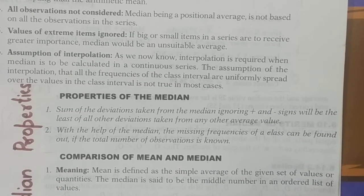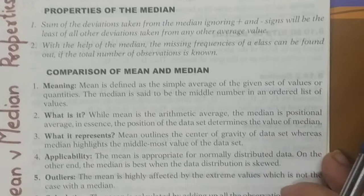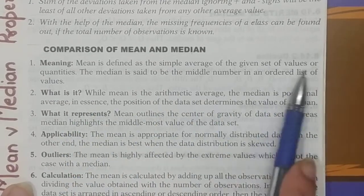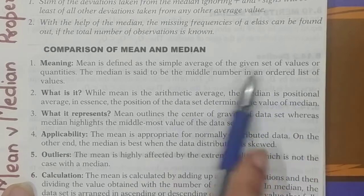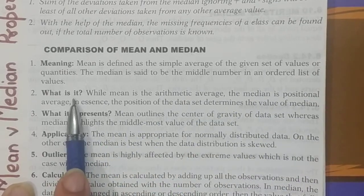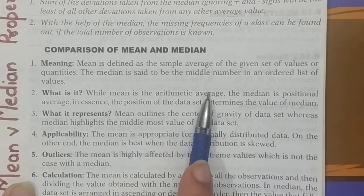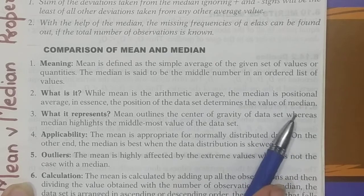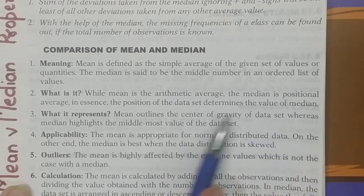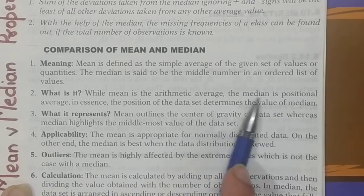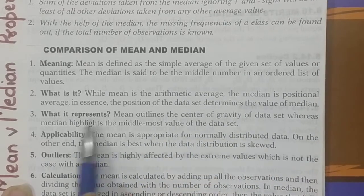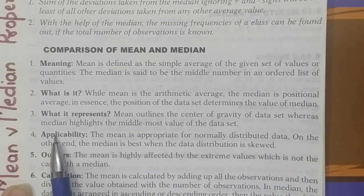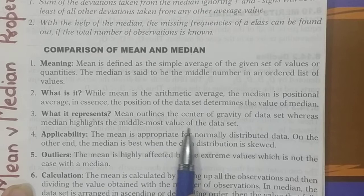Now the last topic: mean versus median. Number one, meaning: mean is a simple arithmetic average — the sum of all values divided by the number of values — whereas median is the middle or central value, making it a positional average. Mean outlines the center of gravity of the data set, whereas median highlights the middle-most value of the data set.